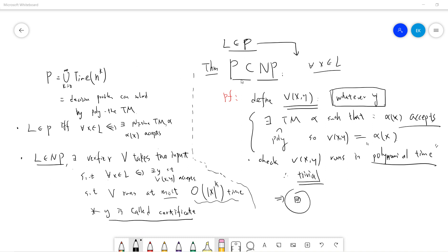Okay, so the theorem says that P is a subset of NP. So, right? So, the proof idea is that it just proves it as mathematics, right? You need to prove a set is a subset.